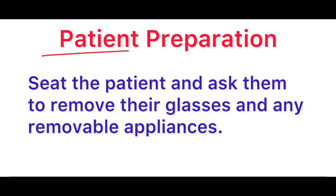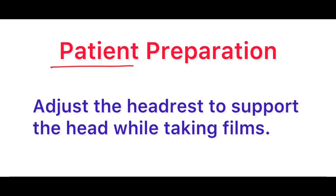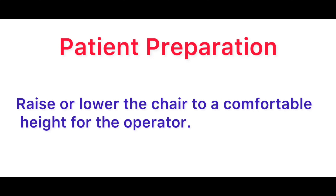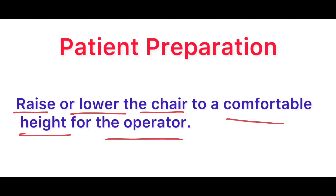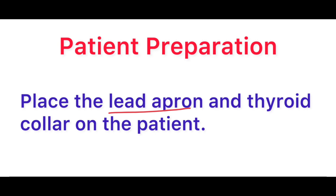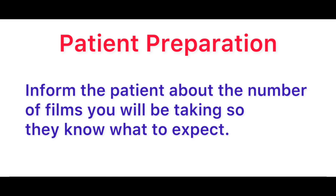Patient preparation is very important. Seat the patient and ask them to remove their glasses or any removable appliances. Adjust the headrest to support the head while taking the film. Raise or lower the chair to a comfortable height for proper operation. Place the lead apron and thyroid collar on the patient. Also inform the patient about the number of films to be taken — for example, two radiographs will be taken — so that the patient is relaxed for the procedure.